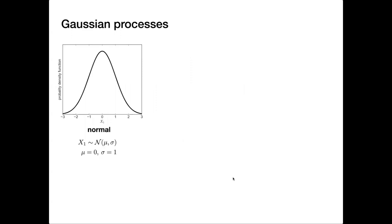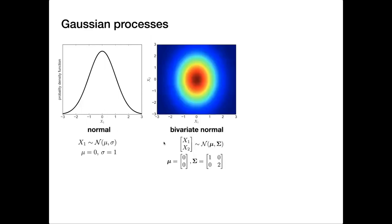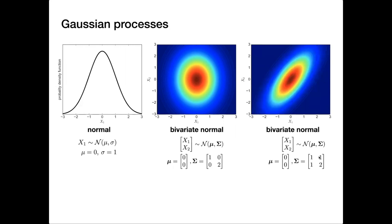I want to give a brief introduction to what a Gaussian process is. Most of you are familiar with the normal distribution, parameterized with a mean and a standard deviation or variance. If we have two variables, we can have a bivariate normal distribution with a vector of means and a covariance matrix. Putting zeros in the off-diagonal terms means the variables are not correlated; putting non-zero values creates correlation. For example, a higher value of X1 makes it more likely we'll also get a higher value of X2.